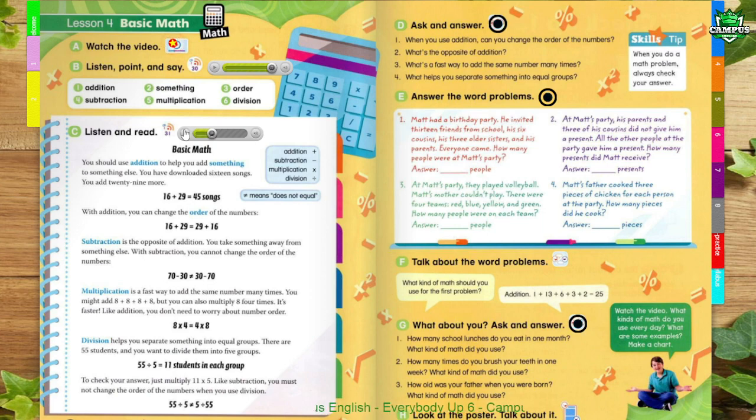Subtraction is the opposite of addition. You take something away from something else. With subtraction, you cannot change the order of the numbers. 70 minus 30 does not equal 30 minus 70.